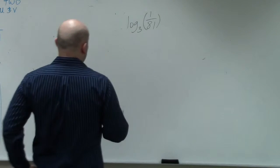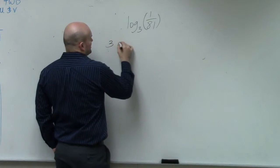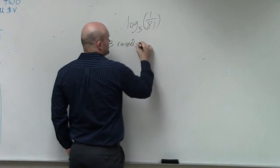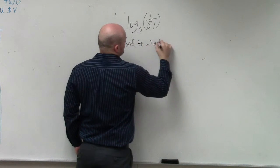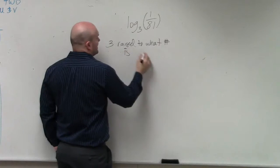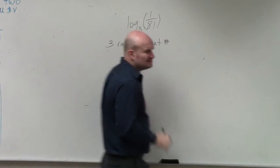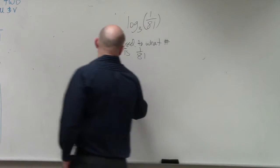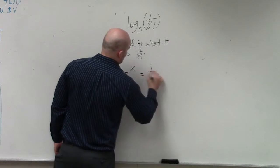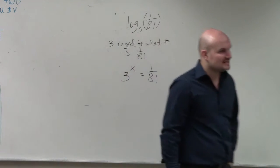So in this example, what the logarithm is asking is 3 raised to what number is 1 over 81? I'll write it as 3 raised to the x equals 1 over 81. That's exactly what this logarithm is asking.